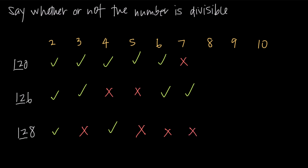For divisibility by 8, we look at the last three digits of the number and see if that number is divisible by 8 — not individually, but together as a whole number. If you had a much larger number in the thousands or millions, you could just take the last three digits. Here, 120 divided by 8 goes in 15 times, so 120 is divisible by 8. Likewise, 128 divided by 8 gives a whole number, so 128 is divisible by 8, but 126 divided by 8 does not give a whole number, so 126 is not divisible by 8.